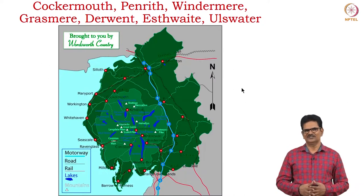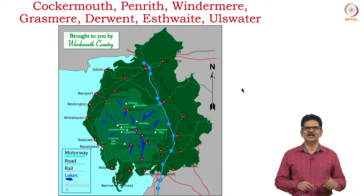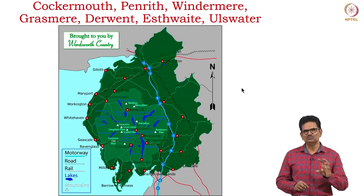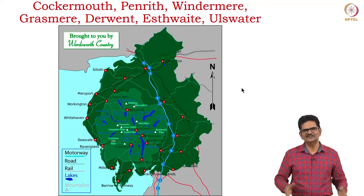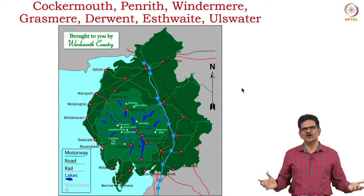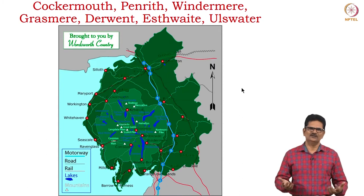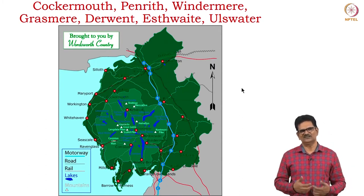This is the map of the Lake District. Key locations include Cockermouth, Penrith, Windermere, Grasmere, Durwand, Esthwaite, and Ullswater. The lakes are indicated in blue. Wordsworth and his friends were living here for some time, moving around, walking in nature, breathing in nature, living with nature, and drawing inspiration from nature to write poetry about themselves and nature.